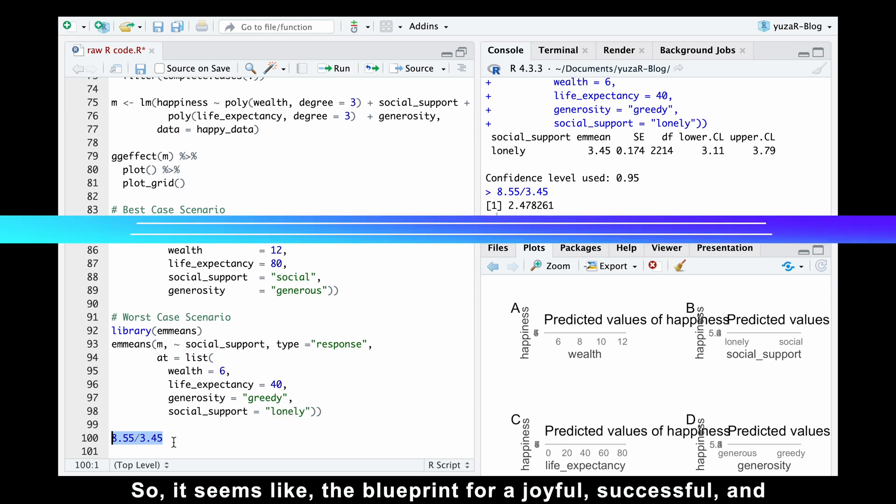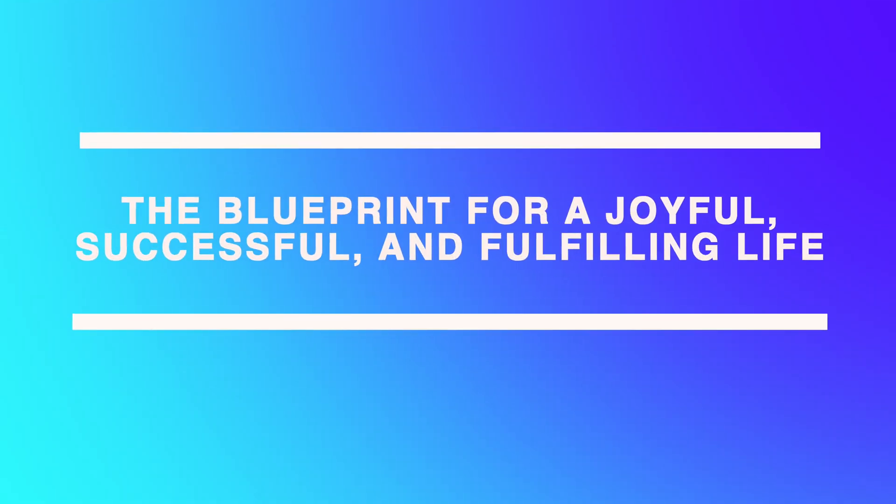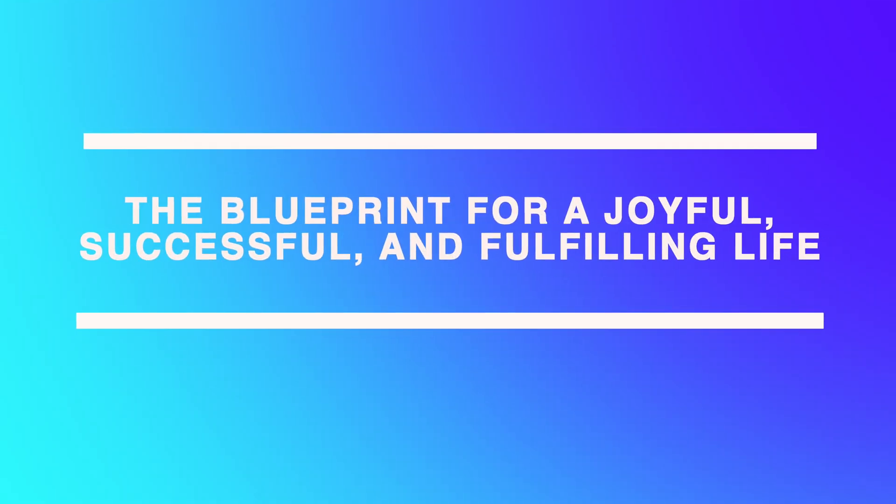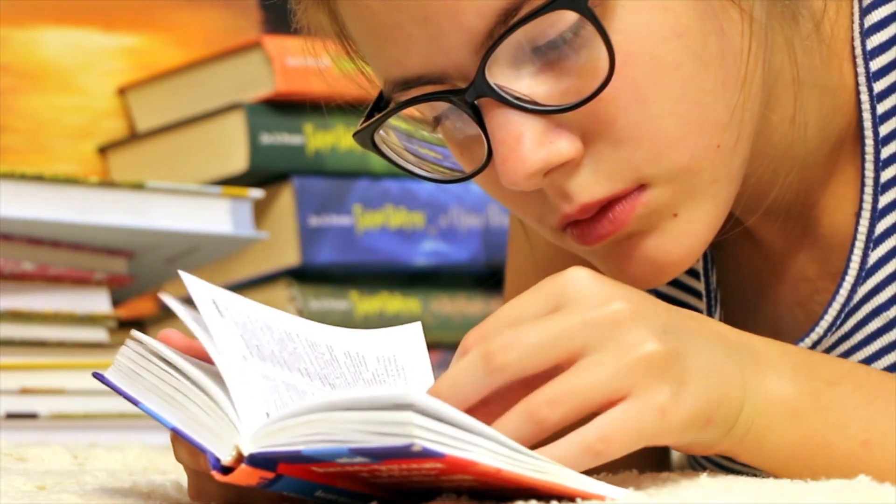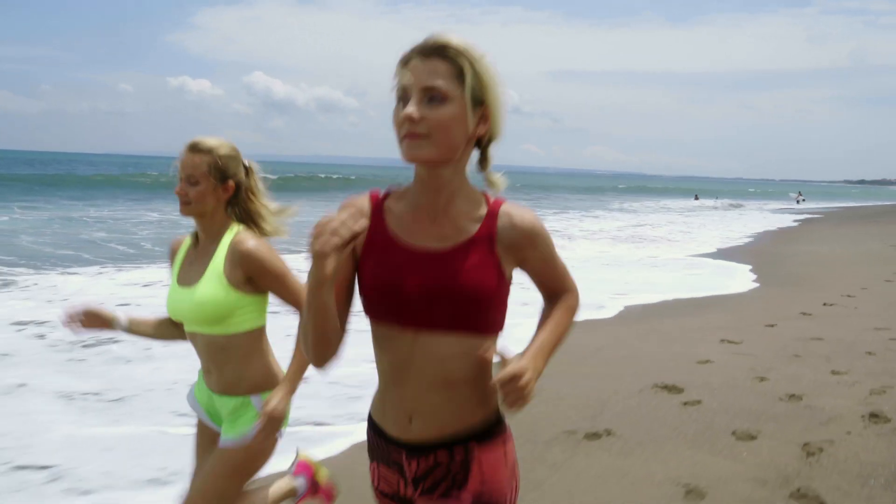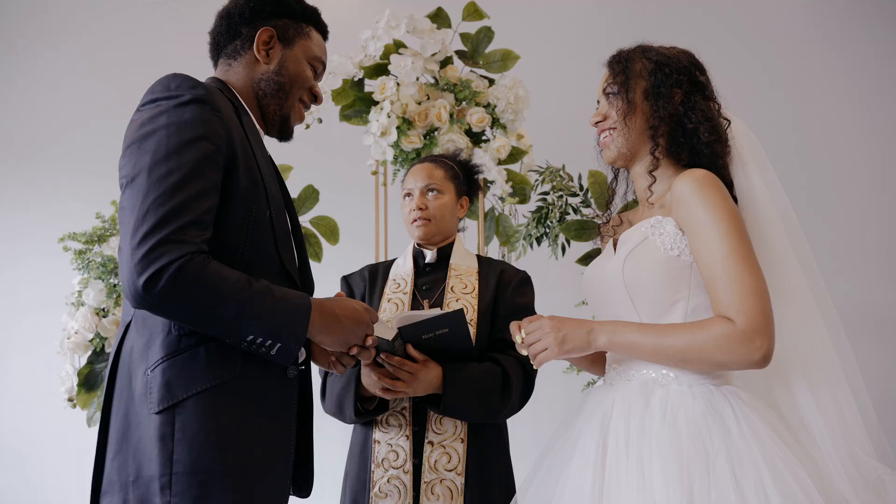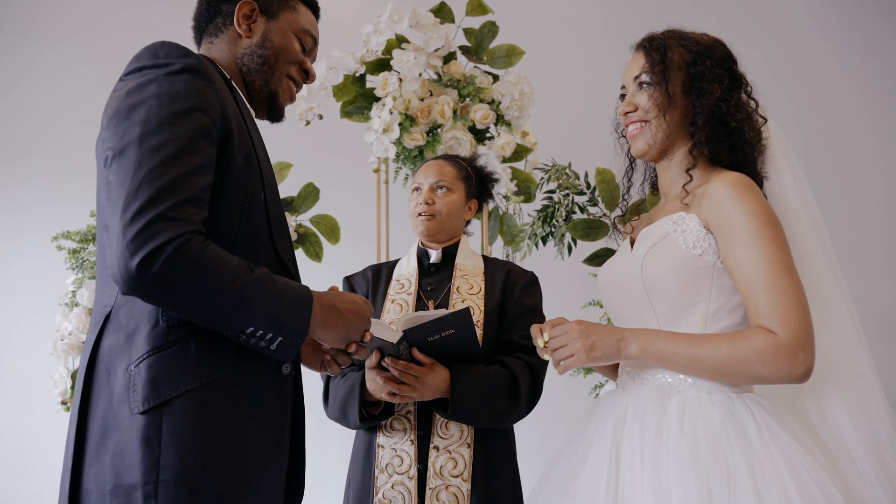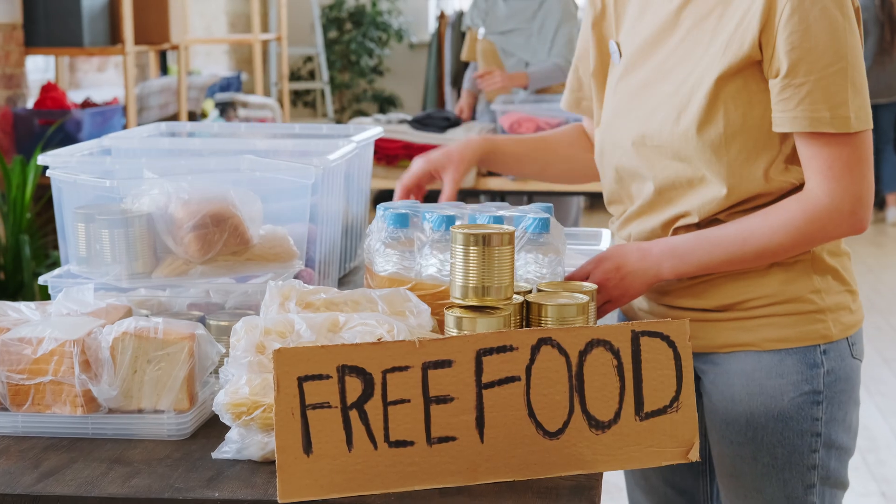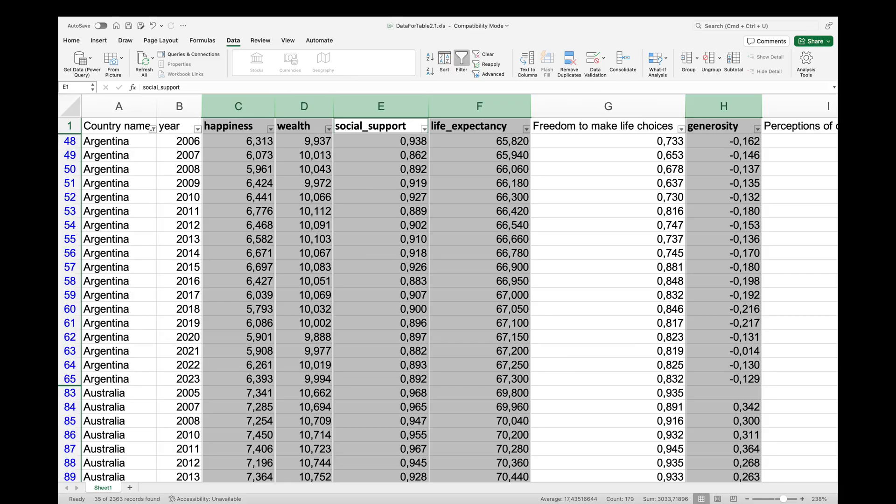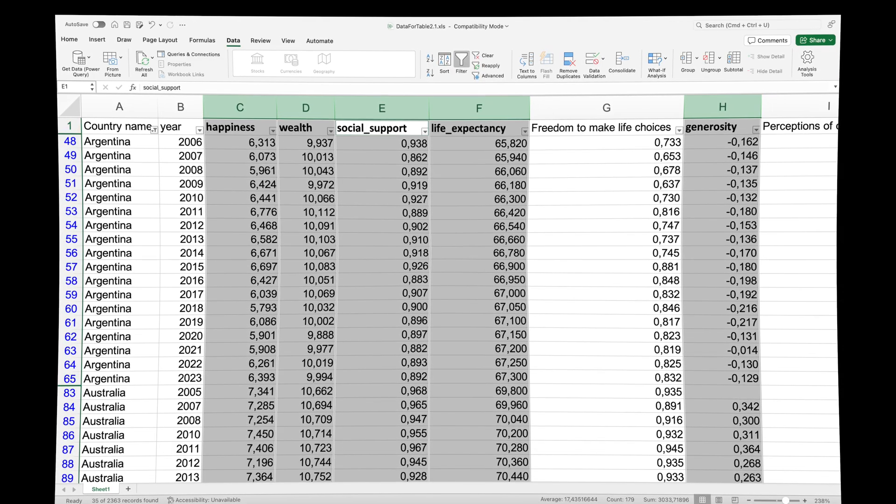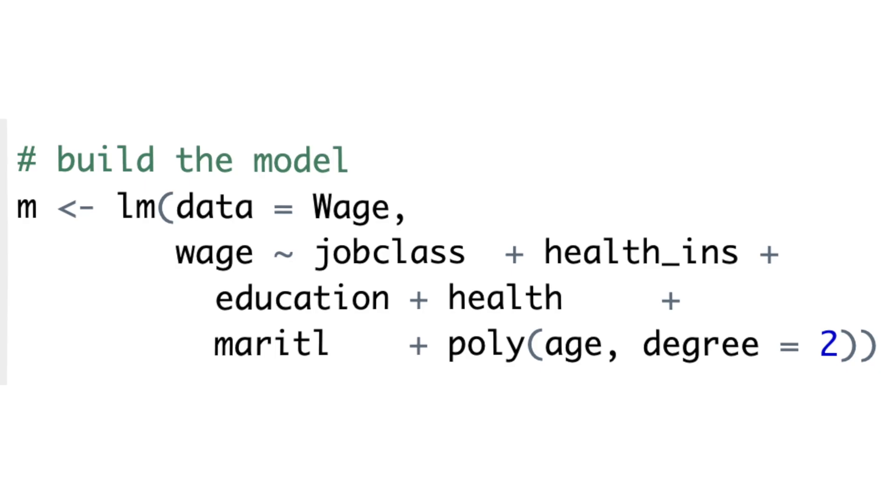So, it seems like the blueprint for a joyful, successful, and fulfilling life involves enhancing our education, embracing a healthy lifestyle, investing in health insurance, nurturing relationships through marriage and friendship, and embodying generosity and kindness. And we only used small publicly available data sets and a basic linear model.